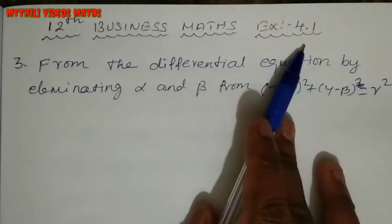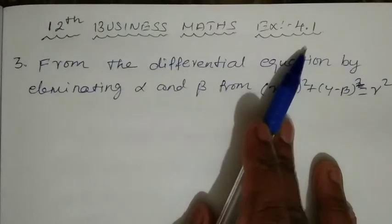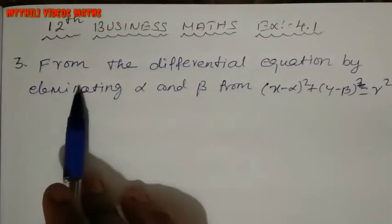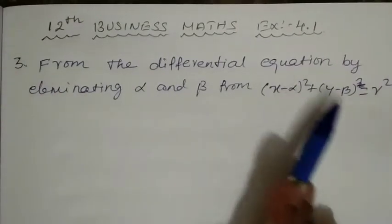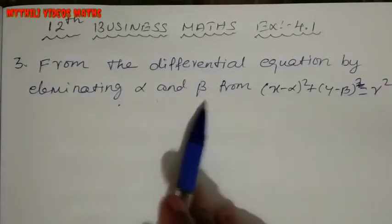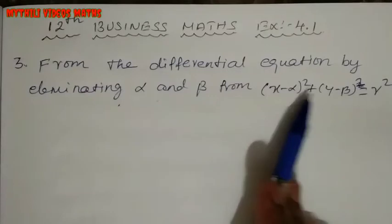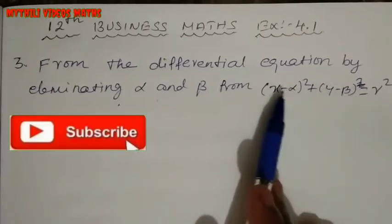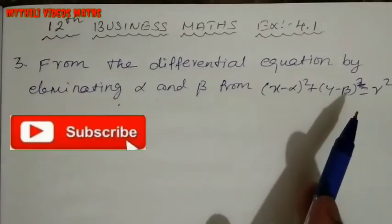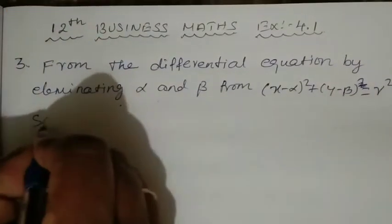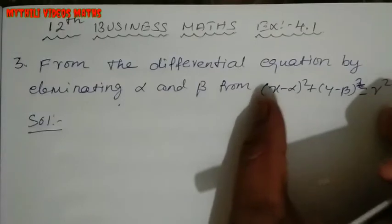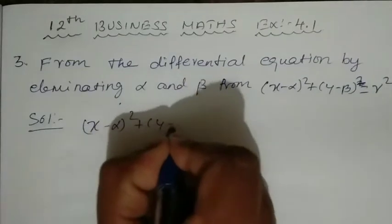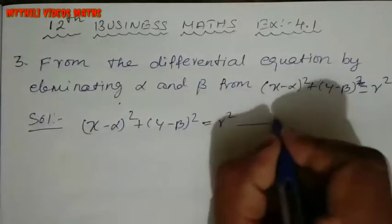Exercise 4.1, this is the differential equation. For the third sum, we will find the differential equation by eliminating alpha and beta from (x minus alpha) whole square plus (y minus beta) whole square equals r square. This is equation 1.